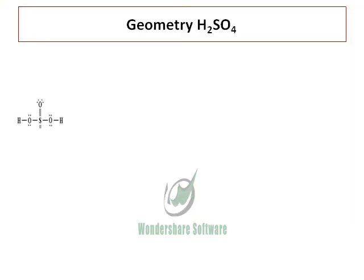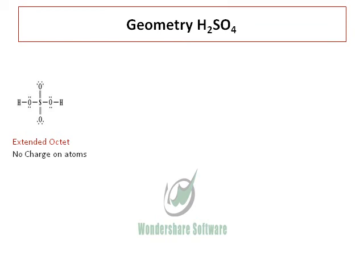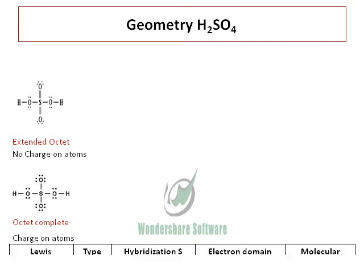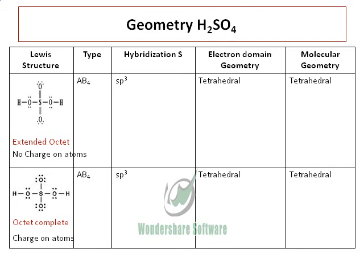To sum up, we have two structures. One with an extended octet on sulfur but no charge on atoms, and the other in which the octet of sulfur is complete but there is charge on the atoms. Both molecules are of AB4 type with four atoms surrounding the central atom. The hybridization of sulfur is sp3, and both the electron domain geometry and molecular geometry are tetrahedral for both structures.